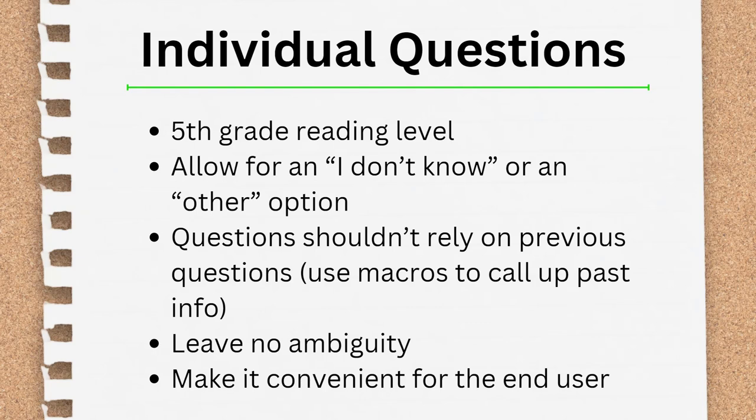A common use of a macro would be a question like: do you have any more monthly expenses to tell me about? They've gone through a repeat loop and told you about each bill that they pay monthly. On that do you have any more question, you could have a learn more that uses a macro to say: you've already told me about your car payment, rent, and insurance payment — to remind them of the three expenses they've already given you. Even with allowing for an other option or an I don't know, you should ensure that the questions aren't ambiguous. Be clear about what you are asking. If you need additional examples or explanations for the end user, add them in learn mores or pop-ups to ensure you're clearly explaining what you are asking for. Finally, the whole point of document assembly is to make form filling easier than the paper copy, so make it convenient for the end user. Use the tools built into the software — like macros, learn mores, functions, and pop-ups — to facilitate users' answers.